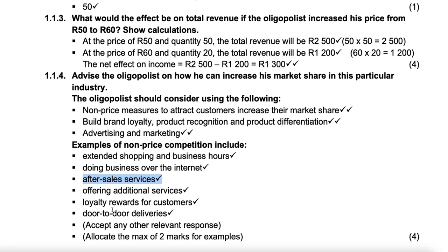Offering additional services and loyalty rewards for customers — we see this quite often at petrol stations: 'Do you have a Clicks card? Do you have a discount card?' Door-to-door deliveries also apply: you are busy, so they deliver the cell phone you bought from them. You'll end up buying from Celsi because they'll come and deliver the phone you want right to your house.